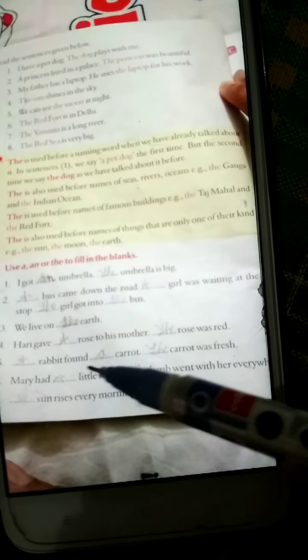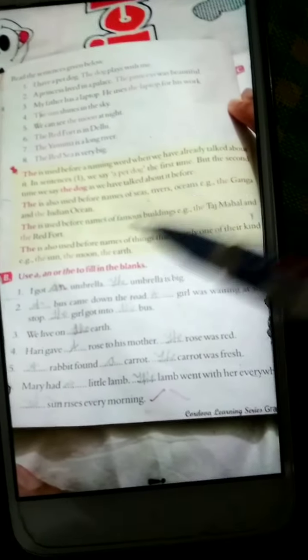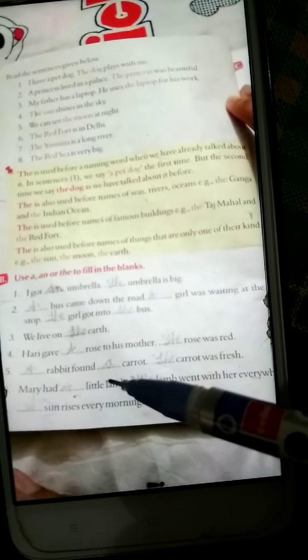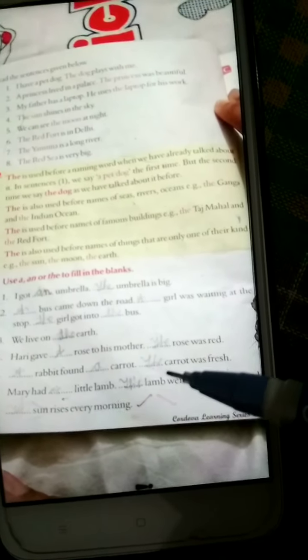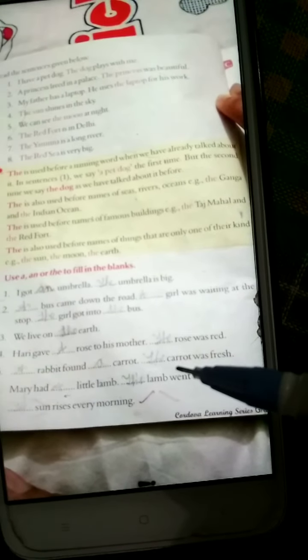Next is: rabbit found dash carrot. Rabbit, 'r' sound, so we will write here 'a'. A rabbit found a carrot. Carrot was fresh. Now tell me, what will come here? We are again talking about carrot, so we will write here 'the'.